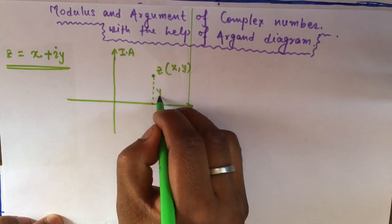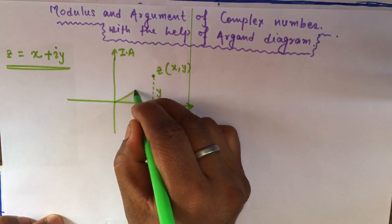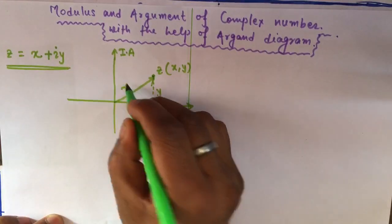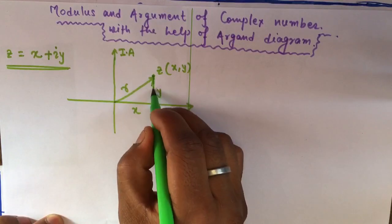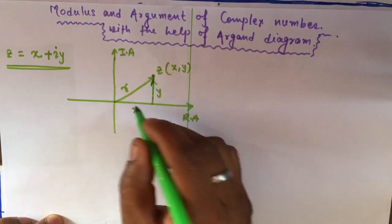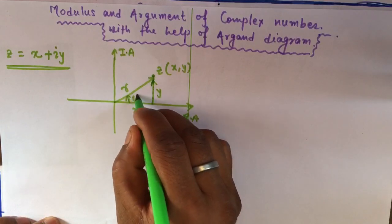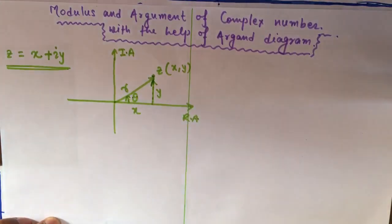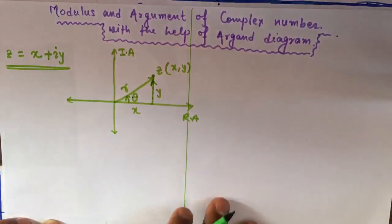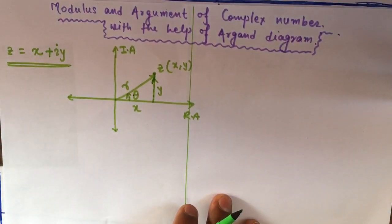Here, y and x are the coordinates, and we take r as the distance from the origin to the point z. The angle theta is measured in the anti-clockwise direction. Remember these points for now.